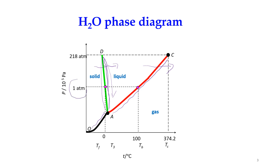At standard pressure of 1 atm, we can see the transformation of solid to liquid at the standard melting point, which is 0°C. Also at standard pressure, we see the standard boiling point of water at 100°C. When we decrease the pressure below the triple point, the solid can only undergo sublimation — it can only transform directly to gas.